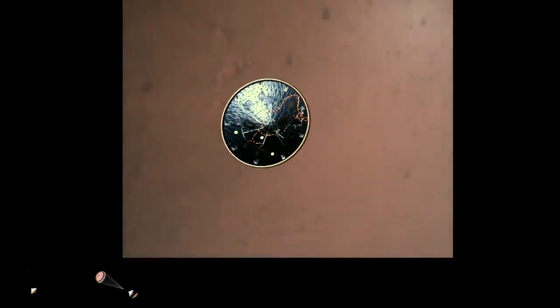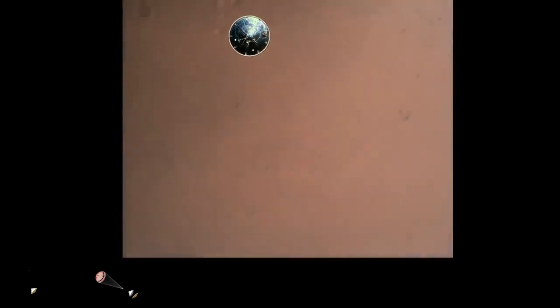Heat shield separated. Perseverance has now slowed to subsonic speeds, and the heat shield has been separated. This allows both the radar and the cameras to get their first look at the surface. Current velocity is 145 meters per second at an altitude of about 9.5 kilometers above the surface.